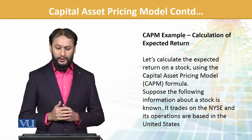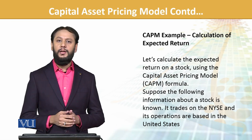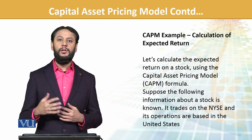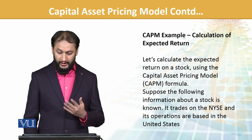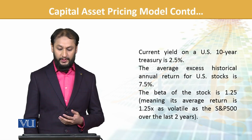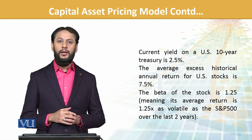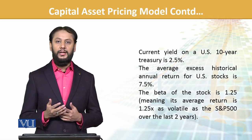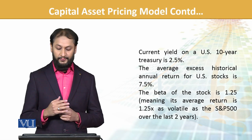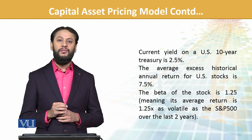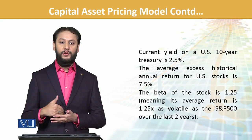Let's calculate expected return using CAPM. Suppose the following information about a stock is known — it is listed on the New York Stock Exchange. We can do local examples too, but international examples broaden your horizon. The data available: current yield on US 10-year Treasury stands at 2.5% — and you should know that the US Treasury is considered the risk-free rate. The average excess return historically seen in the stock market is 7.5%. The beta for the stock is 1.25, meaning our sensitivity is slightly higher than the market — our volatility is greater.